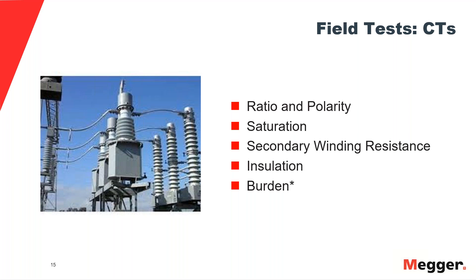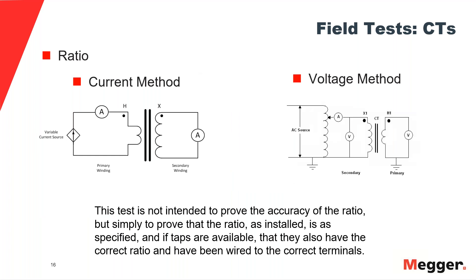All of these tests are described in the standards, both IEEE and IEC. Let's start with the ratio test. For this measurement, we have two methods available. The first, sometimes called primary injection or the current method: we connect an AC current source to the primary side of the current transformer, inject a current, and measure the resulting induced current in the secondary side. This pretty much reproduces the exact same condition of the CT when it's in service.